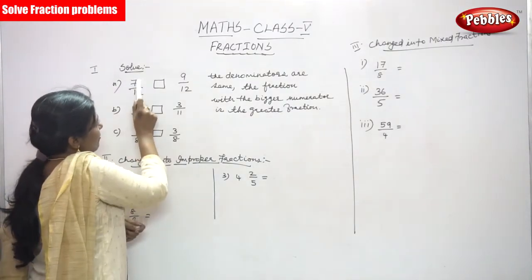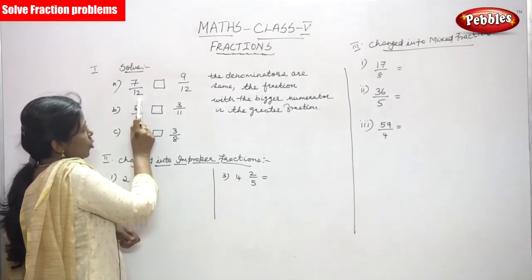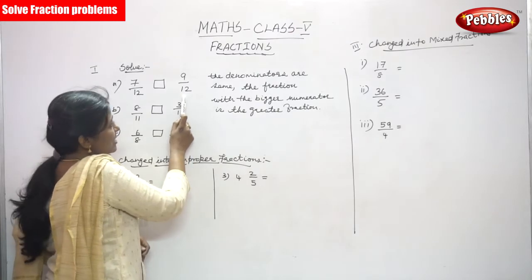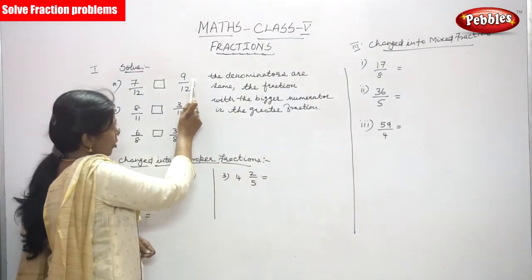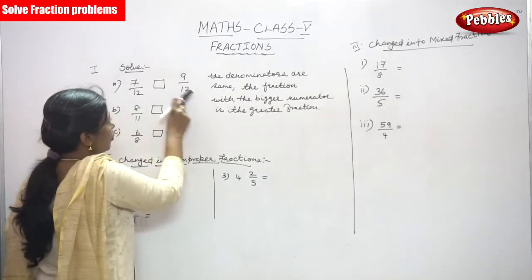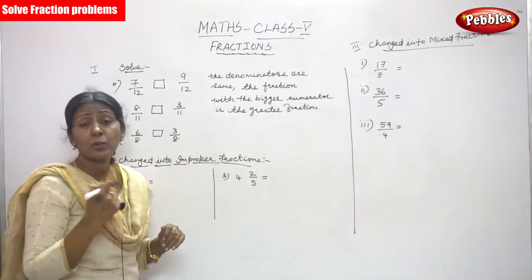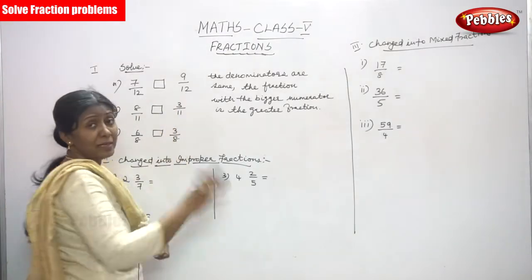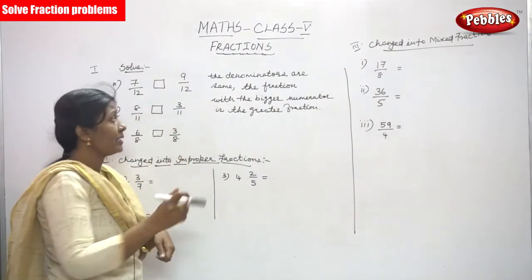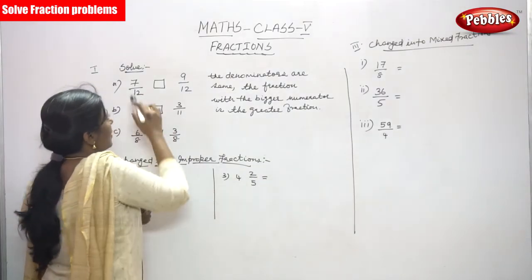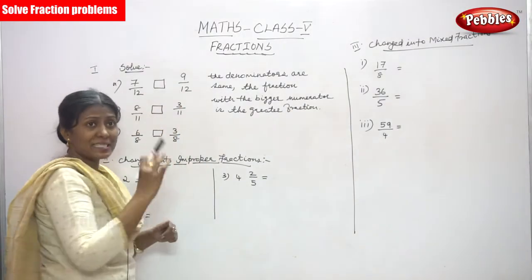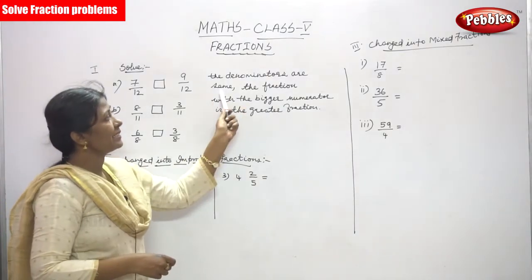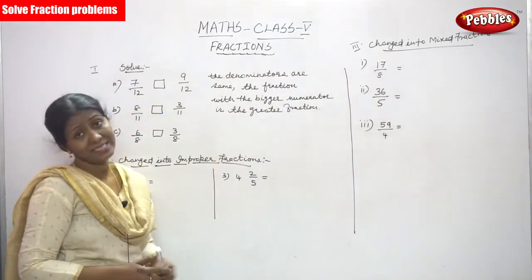In 7 by 12, the denominator is 12 and the numerator is 7. In 9 by 12, the denominator is 12 and the numerator is 9. In both fractions the denominator is the same, but look at the numerators — the numerators are different. So the denominator is the same; the fraction with the bigger numerator is the greater fraction.